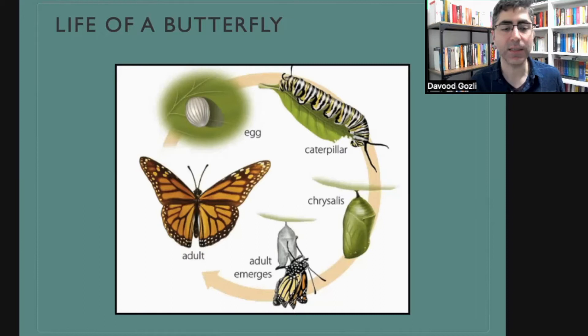We get the egg — that's stage one — then the caterpillar, then the chrysalis, and then the adult butterfly emerges from the chrysalis. These are visibly distinct stages.